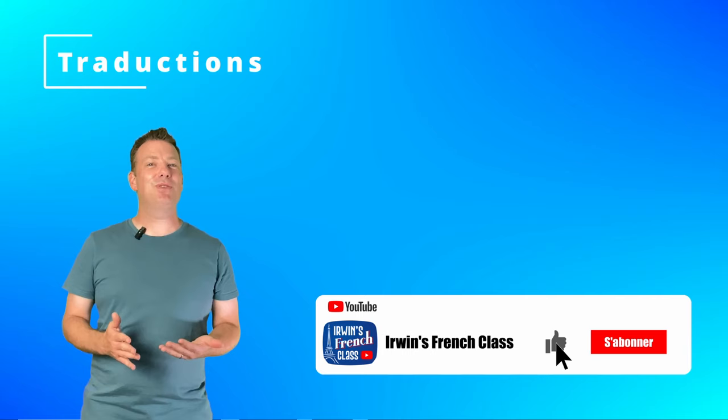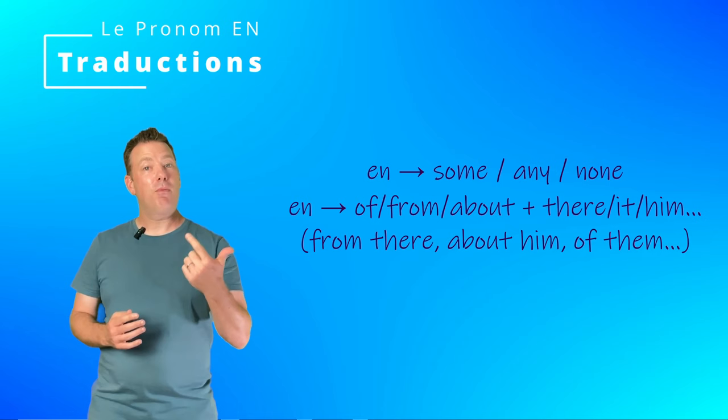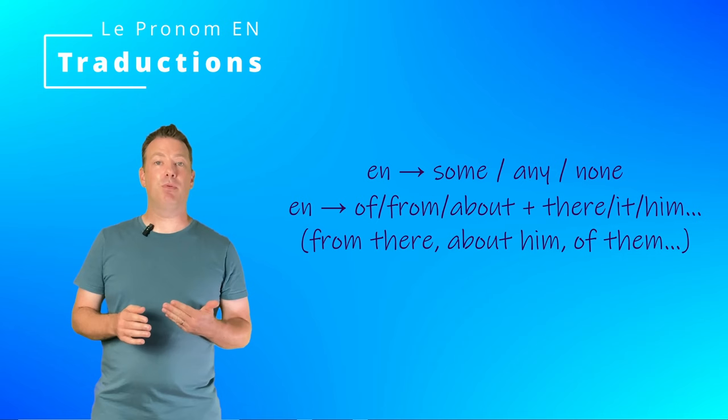The pronoun EN often corresponds to the English pronouns SOME and ANY, and even NONE in negative sentences. But in some cases, it could also be translated by a preposition — OF, FROM, or ABOUT — and THERE, IT, or even a stress pronoun. For example: FROM THERE, ABOUT HIM, OF THEM.